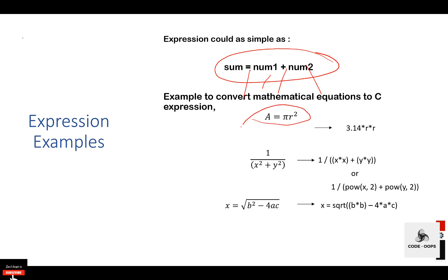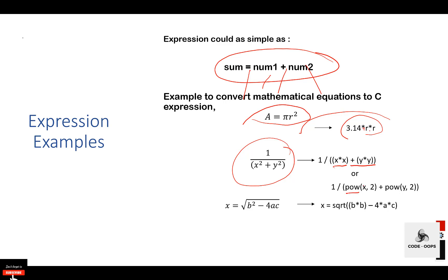Now let's look at converting mathematical equations to C expressions. The equation a = π r² can be written in C as a = 3.14 * r * r, where star is the operator for multiplication. Another mathematical equation is 1 / (x² + y²), which can be written in C as 1 / (x * x + y * y).